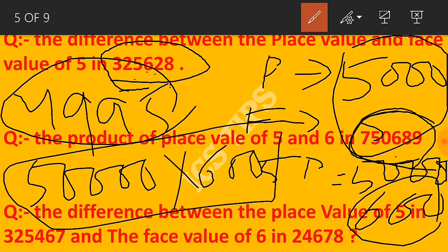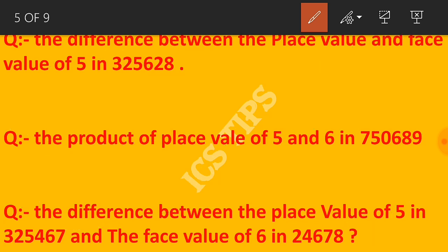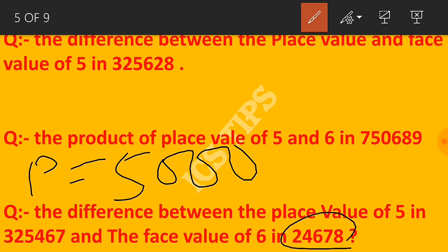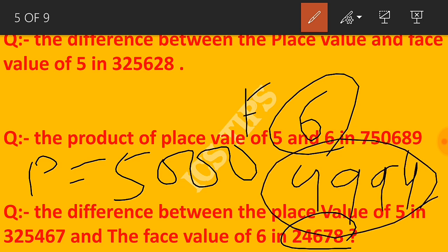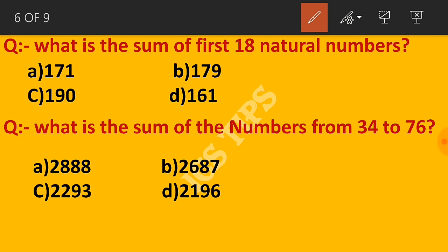The place value of 5 is 50,000 and the place value of 6 is 600. The product is 50,000 times 600.